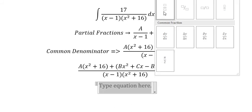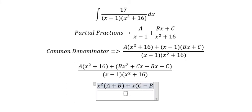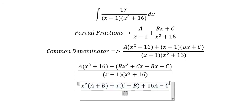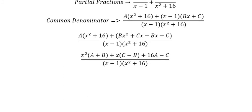Next we need to arrange based on the power of x. So we have x square, you got A plus B. About x we got C minus B. And then we have 16A minus C and now we create the system of equations.